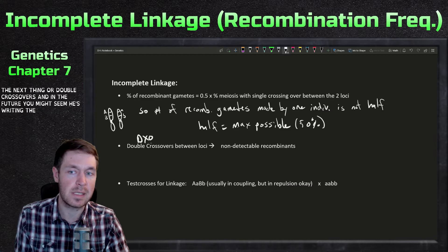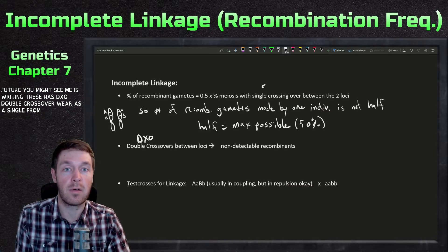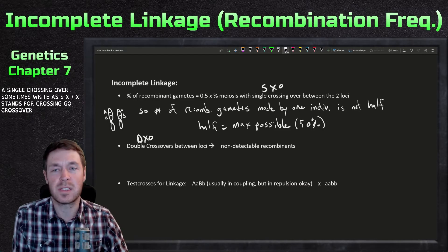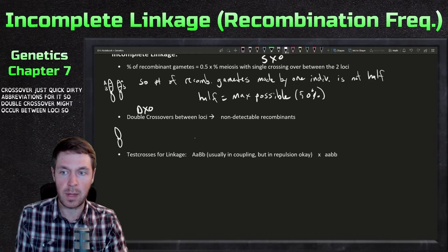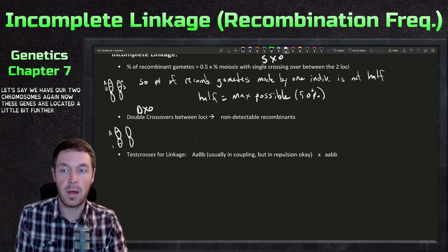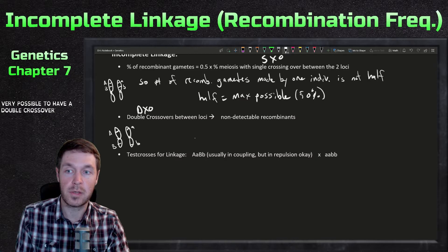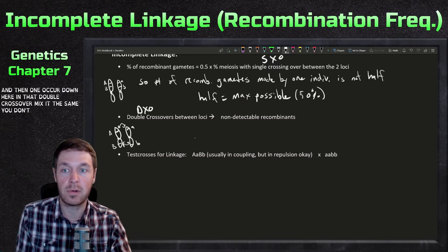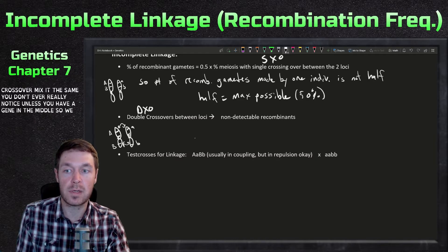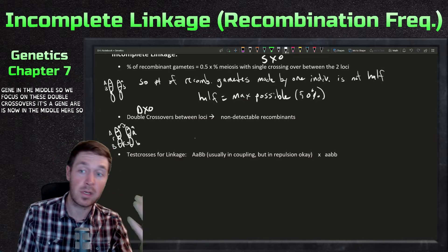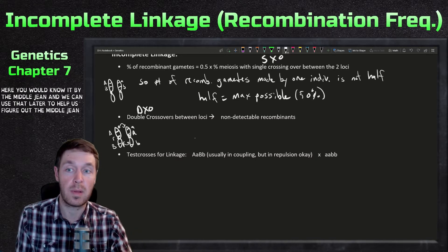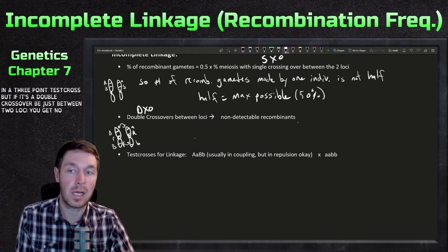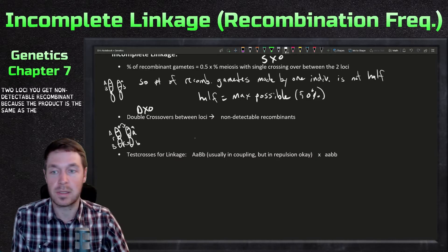Next are double crossovers. I'll sometimes write these as DXO (double crossover) and single crossovers as SXO, where X stands for crossover. A double crossover might occur between loci — one crossover here and one further down — and that double crossover makes the result look the same as the parent, so you don't notice it unless there's a gene in the middle. If gene R is in the middle, you can detect the double crossover via that middle gene. Without a middle gene, you get non-detectable recombinants.